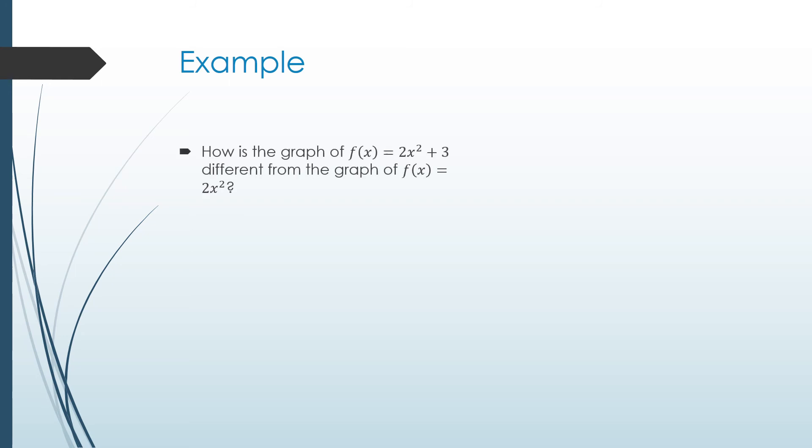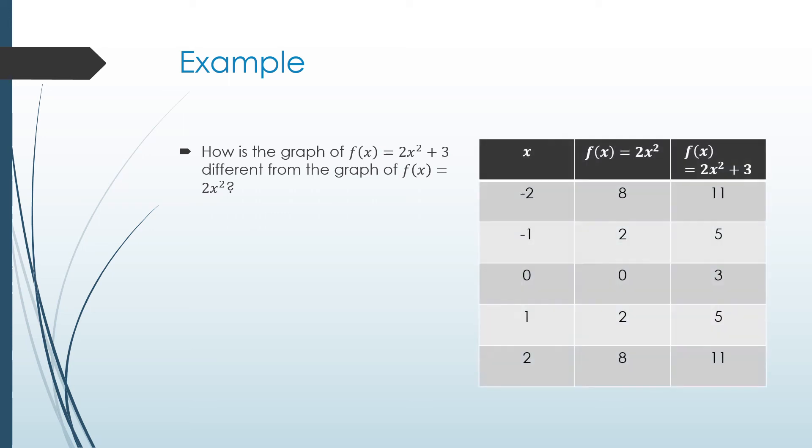Here's an example: how is the graph of f of x equals two x squared plus three different from the graph of f of x equals two x squared? Pause the video at this point to see if you can come up with a description. When we take a look at doing a table for both, you can see that each time we go from two x squared to two x squared plus three, the graph moves up three values. Therefore, to describe this graph, the graph moves up three units up the y-axis.